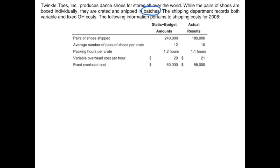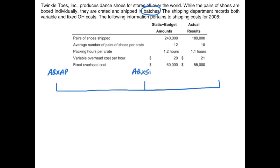The first thing we want to do is draw our variance analysis diagrams that we use to compute our variances. I'll label each peg: actual quantity times actual price, actual quantity times standard price, and standard quantity times standard price. This first chart will be for variable overhead. The two variances we'll compute for variable overhead are our spending variance and our efficiency variance.